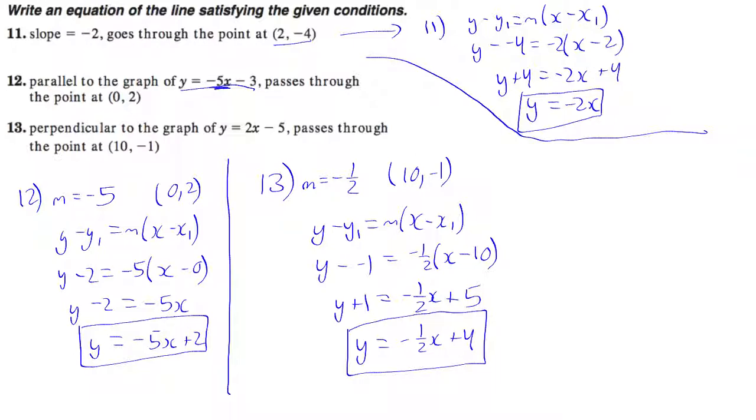For all of these, I could have used slope-intercept form, but I chose point-slope form because it was easier. It was more straightforward.